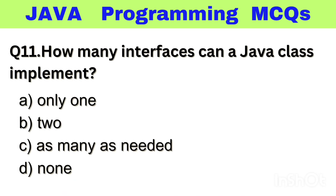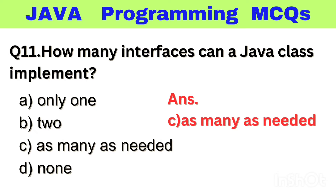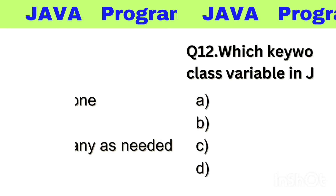Question number 11. How many interfaces can a Java class implement? Option A: Only one, B: 2, C: As many as needed, D: None. The right answer is option C, as many as needed.